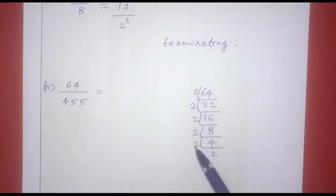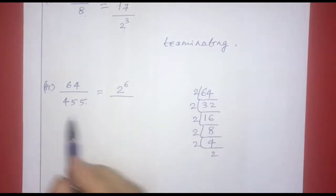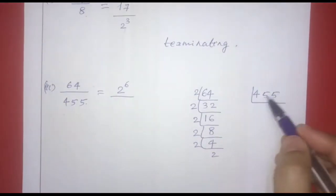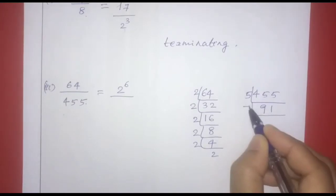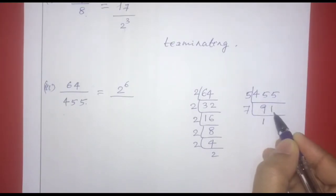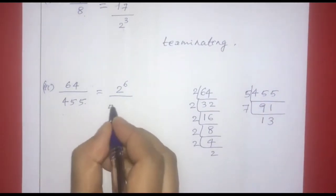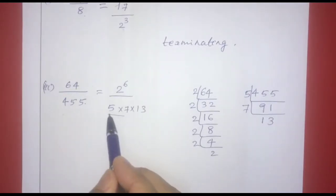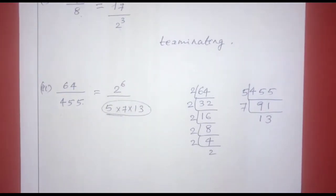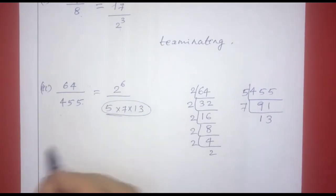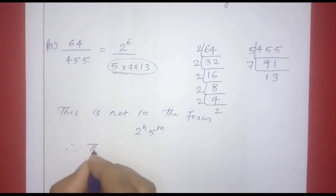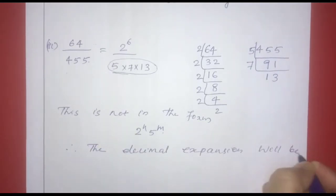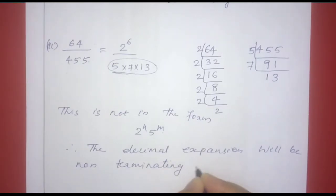Next, we have 64 divided by 455. The prime factorization of 455 is 5 into 7 into 13. Since the denominator contains factors other than 2 and 5, it is not of the form 2 raised to n into 5 raised to m. Therefore, the decimal expansion is non-terminating repeating.